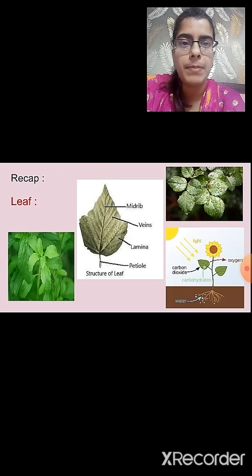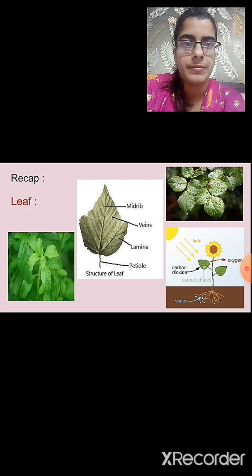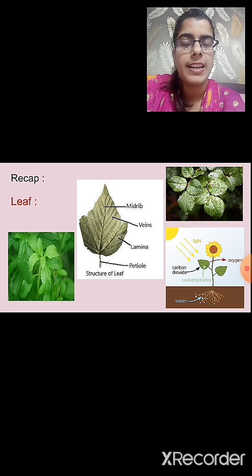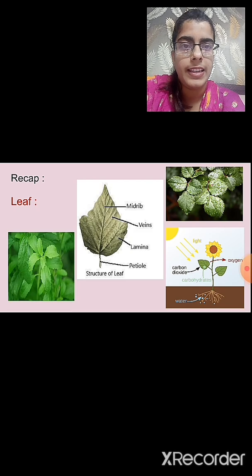In our previous session we studied about the leaf. We saw the variation in the size, shape, and color of the leaf. Then we studied about the structure of the leaf. The leaf consists of the petiole, lamina, veins, and midrib.